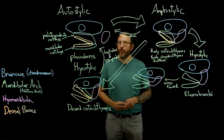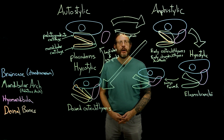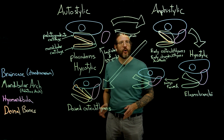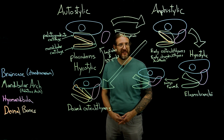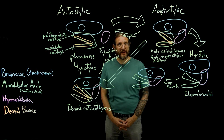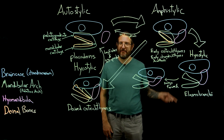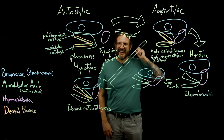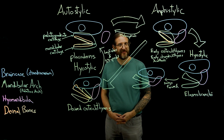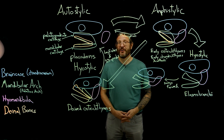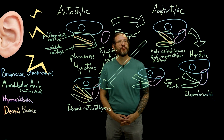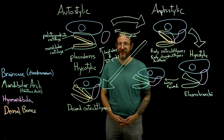Fascinatingly, we still have a hyomandibula, but its function changed completely once it was no longer needed to suspend the jaw. Over evolutionary time, our hyomandibula shrank and became the stapes of our inner ear — a tiny bone that helps us to receive sound waves. Really, really. So let's hear it for the ability of evolution to repurpose pieces of anatomy for new uses.